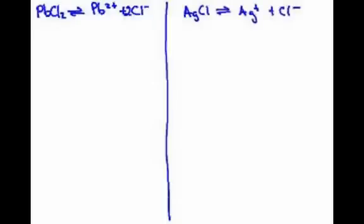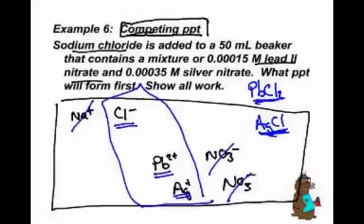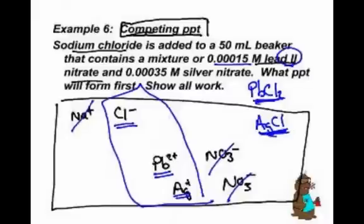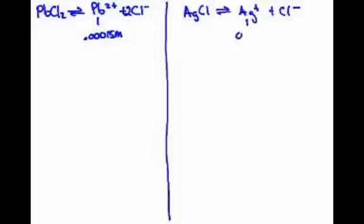So write this out, and now we're going to go back to our problem, and we're going to get some numbers here. What do I know about each of these numbers? We've got a 50 milliliter beaker, and it's 0.00015 molar lead two nitrate. So that's the lead two. We forget the nitrate. So if I go back here, the lead two here is 0.00015 molar. And then the silver, we go back and we find that number, 0.00035 on that one. The silver was 0.00035.